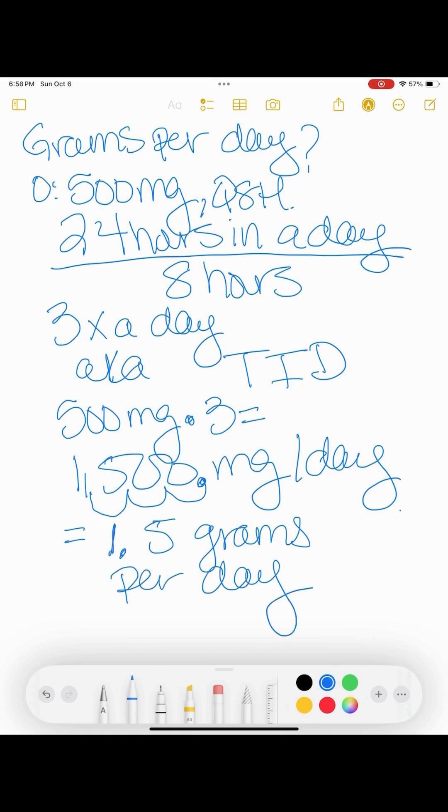I do have easier videos on converting and where I break things down a little bit more. So feel free to reference those. But essentially when you're moving from milligrams to grams, you move the decimal three places to the left, or you're dividing by a thousand. So however it makes more sense to you, but essentially you got the answer in milligrams, so you have to convert it to grams. So it's 1.5 grams per day. It's the same thing as dividing 1,500 by 1,000, whatever makes more sense to you and makes your life easier.